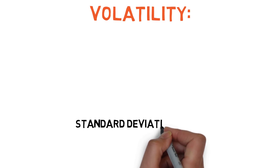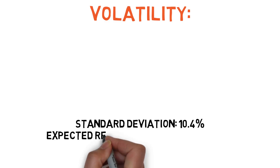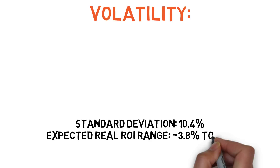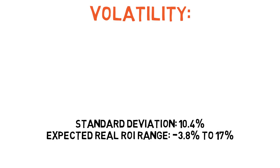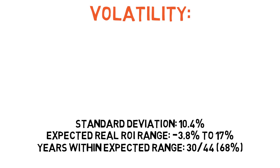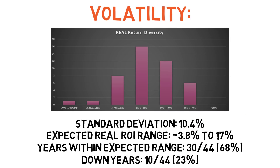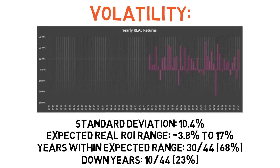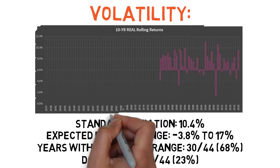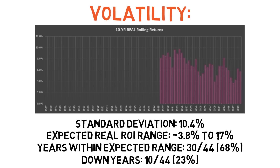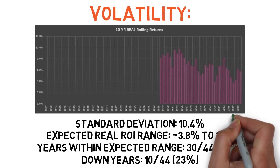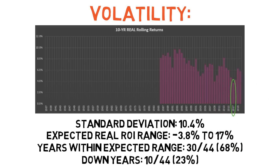The average standard deviation of returns for the Pinwheel Portfolio was 10.4%, meaning most returns in any given year will fall somewhere between negative 3.8% and 17%. There were 10 years out of 44 where the portfolio failed to keep pace with inflation — a loss frequency of around 23%. However, there wasn't a single 10-year stretch where the strategy failed to keep pace with inflation, with its worst rolling 10-year return coming in at 3.6% per year between 2007 and 2017. Its median and average 10-year inflation-adjusted returns were 6.7% per year, with the best 10-year run from 1984 to 1994 returning 9.6% per year above inflation.